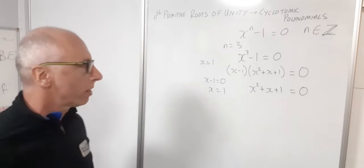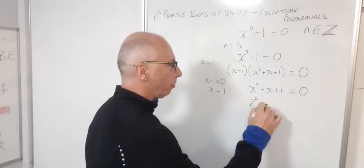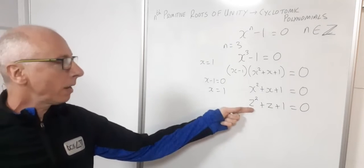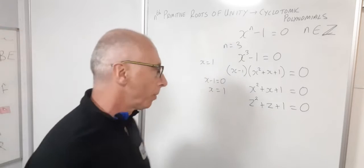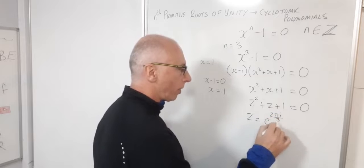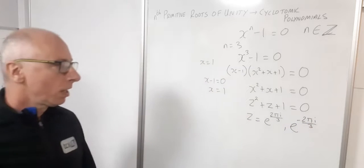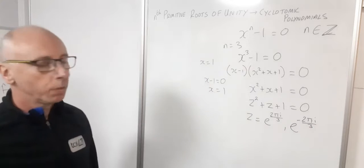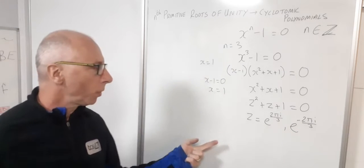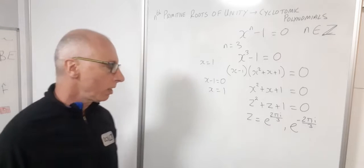Here we're into the realm of complex numbers. In complex numbers, z squared plus z plus one equals zero has two solutions since it's a second-order polynomial. Those solutions are z equals e to the 2πi/3 or e to the minus 2πi/3 — conjugates of each other, expressed here in exponential form.